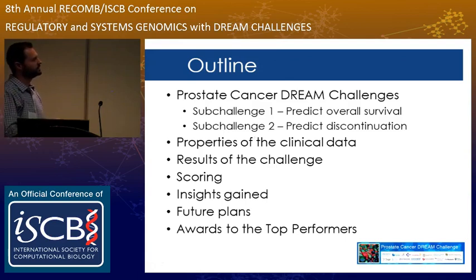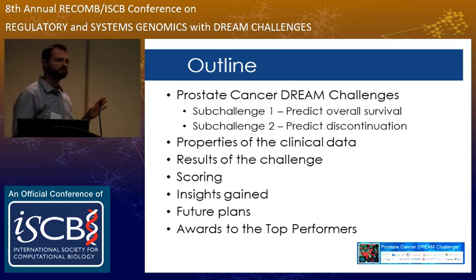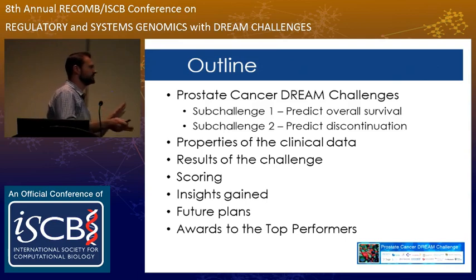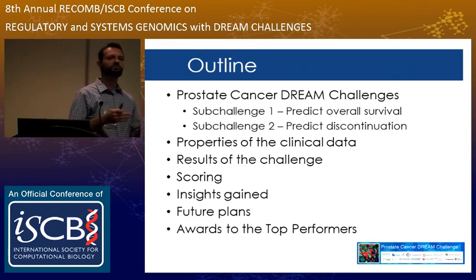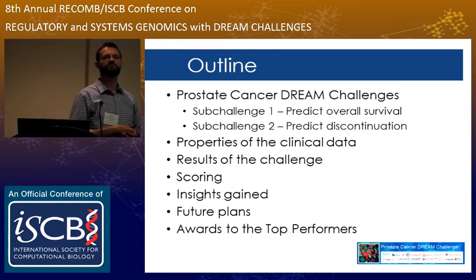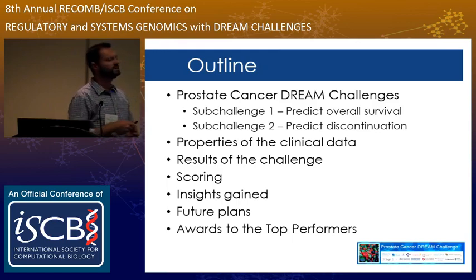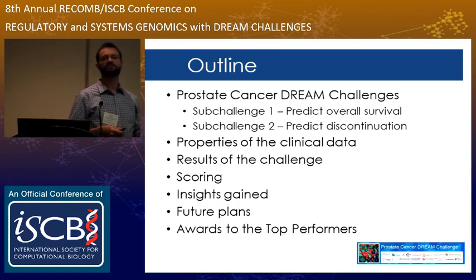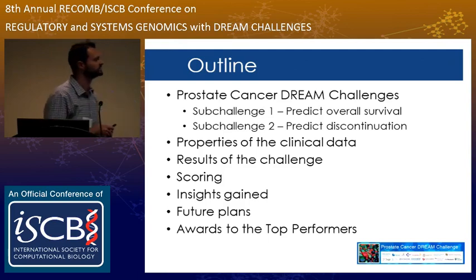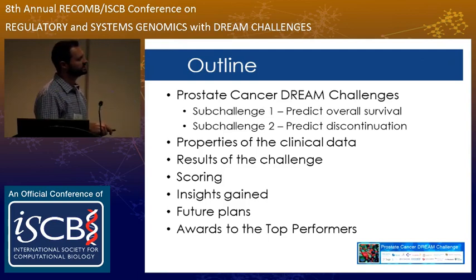Sub-challenge one consisted of two sub-sub-challenges. One was the traditional prediction of overall survival that you're probably familiar with if you've done any type of survival analysis. One B was a bonus challenge looking at predicting exact time to event for the patients where we had time-to-event data — in this case, death of the patient for overall survival.